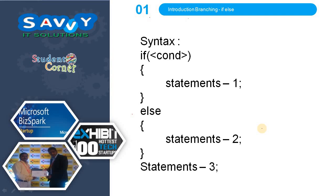Here I have also mentioned the syntax of if-else. If the condition is true, then statements 1 and statements 3 are executed. If the condition is false, then statement 2 and statements 3 are executed. The condition may be simple or complex. Simple means checking one condition, like A greater than B. Complex means using more relational operators, like A greater than B and A greater than C. Also, if the number of statements is 1, using brackets is optional; if more than 1, brackets are mandatory.